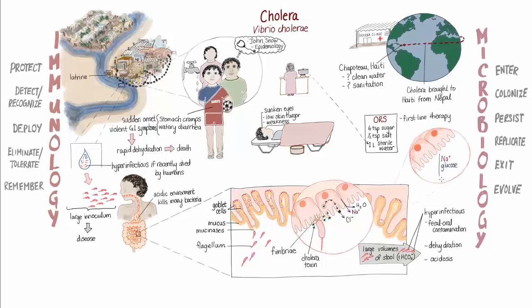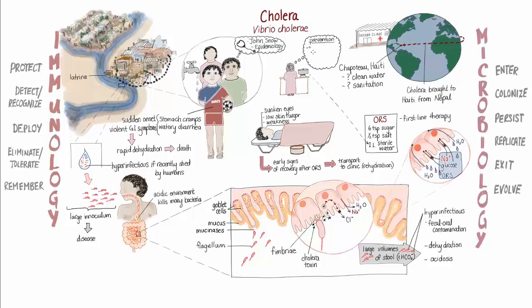The sodium and glucose in ORS make use of a different transporter to replenish electrolytes in the host, allowing for rehydration and recovery. In Philippe's case, the ORS saved his life and allowed his family to transport him to a satellite clinic operated by a non-profit organization about an hour from their home. At the clinic, Philippe received rehydration therapy, and the family was given chlorine bleach and advised to sanitize the home and safely dispose of all fecal waste. Jan contacted local government officials, and warnings were posted around the contaminated water source with directions on how to decontaminate the water.